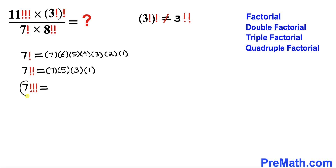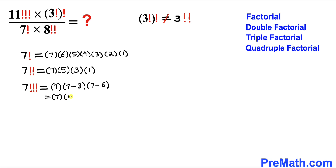Now let's take care of 7 triple factorial. That is equal to 7 times (7 minus 3) times (7 minus 6), so it becomes 7 times 4 times 1. The common difference between consecutive numbers is 3, since we are dealing with a triple factorial.